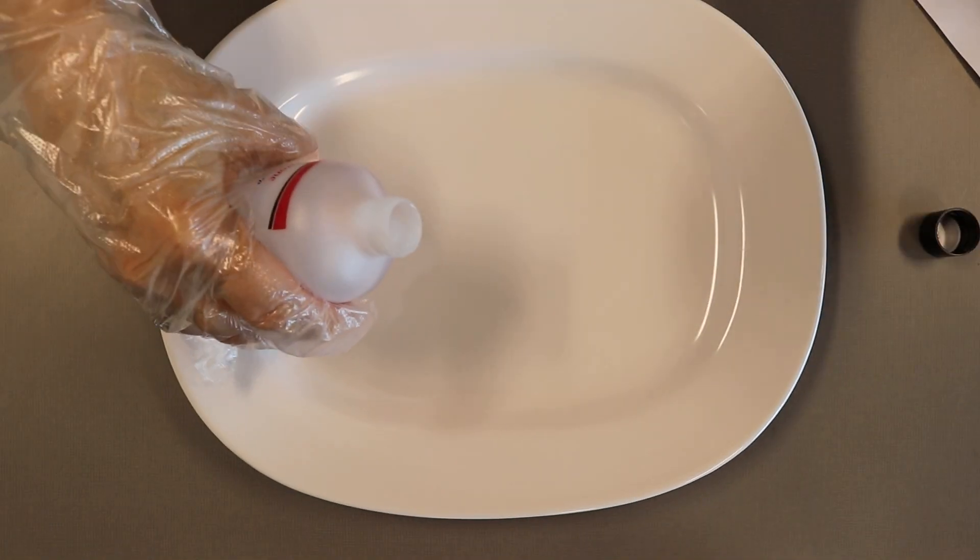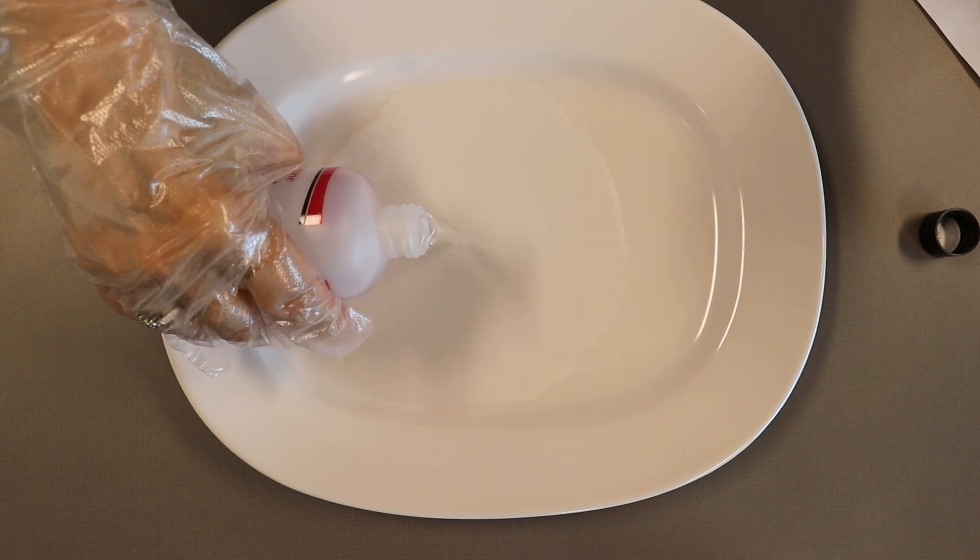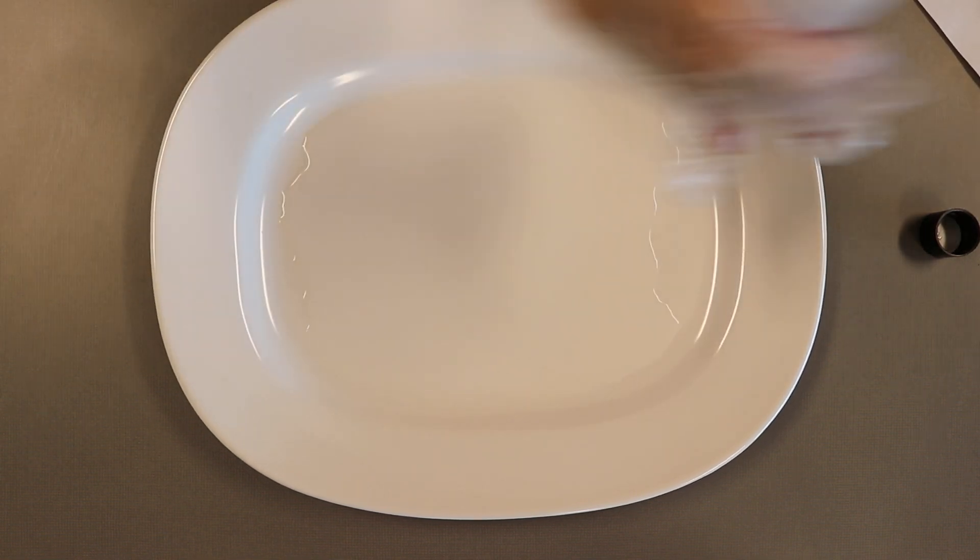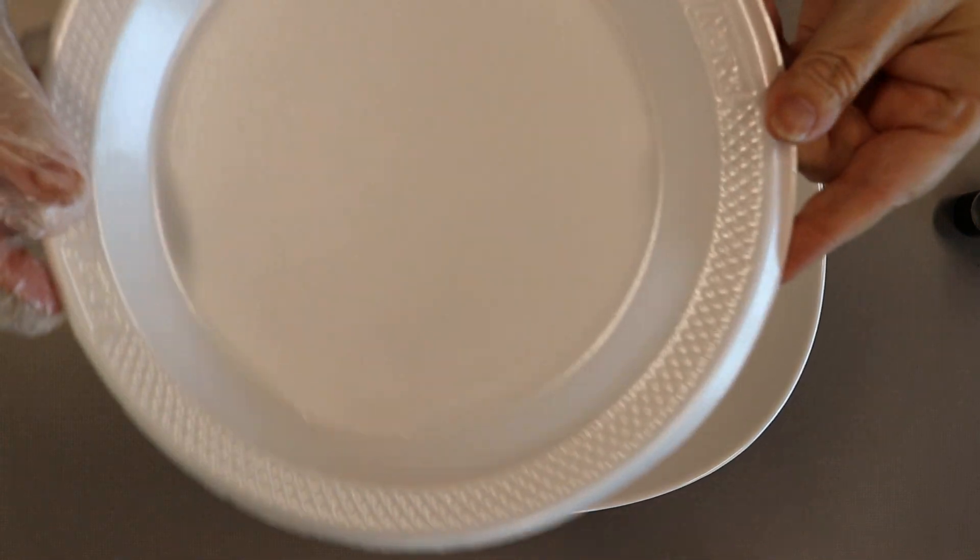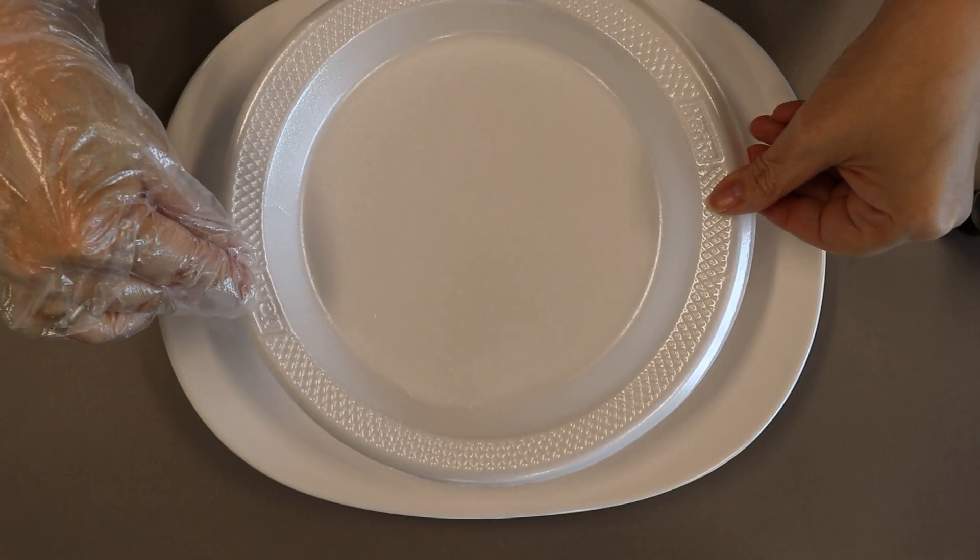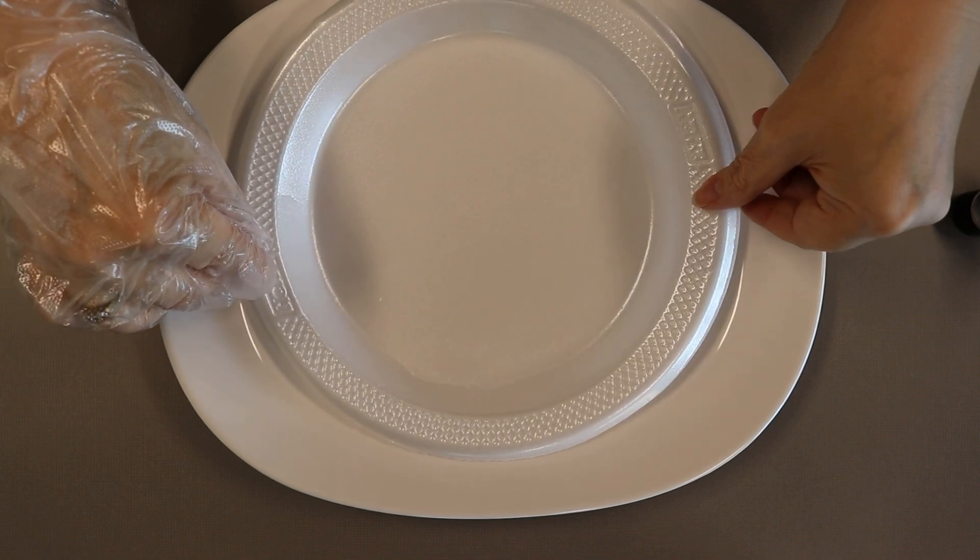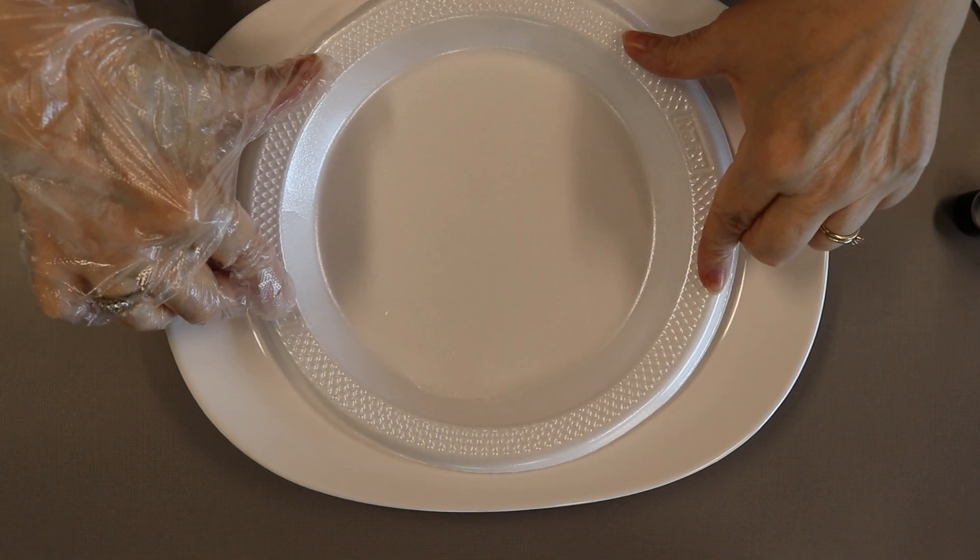Now you want to use gloves and pour about a half a cup, I'm going to estimate, right on my platter or dinner plate. Now we're going to take your styrofoam plate and lay it down right in the acetone to see what happens.